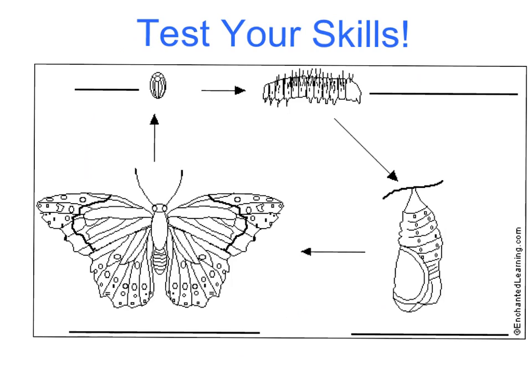Now let's test your skills. What is the first stage in the butterfly life cycle? Right, it's the egg. What happens after the egg hatches? Right, the caterpillar comes out. After the caterpillar comes out and is fully grown, what happens? Right, it forms its chrysalis.